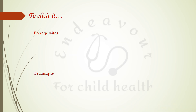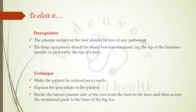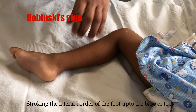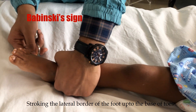To elicit it, the plantar surface of the foot should be free of any pathology. The eliciting equipment should be sharp but non-traumatic — for example, the tip of the hammer handle or preferably the tip of a key. Make the patient lie relaxed on a couch, explain the procedure, and stroke the lateral plantar side of the foot from the heel to the toes and then across the metatarsal pads to the base of the big toe. This is how the Babinski sign is elicited by stroking the lateral border of the foot up to the base of the toes.